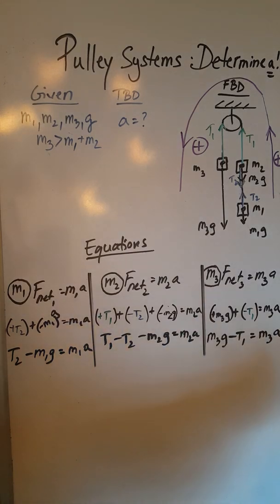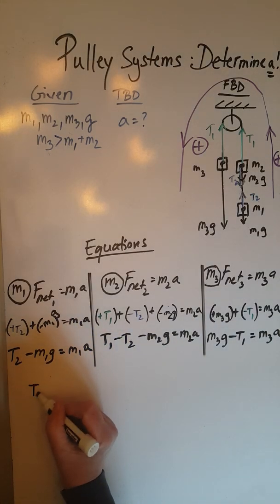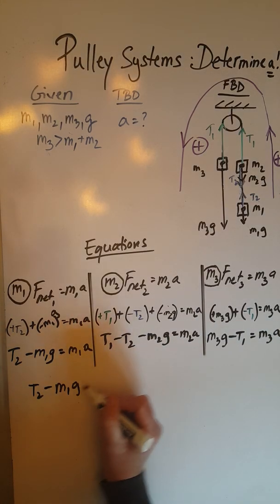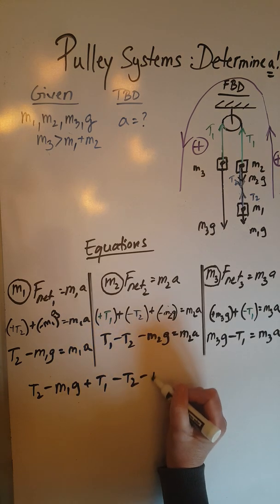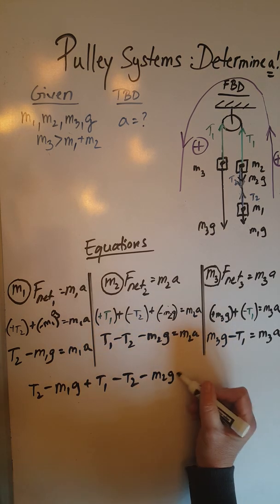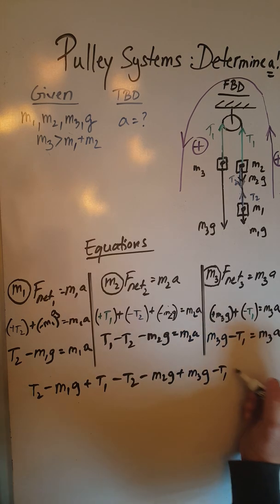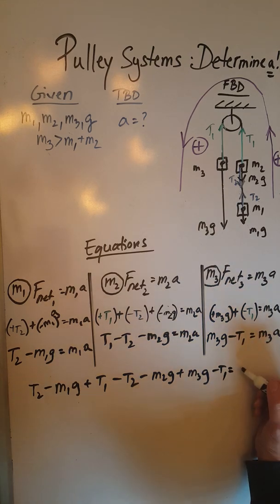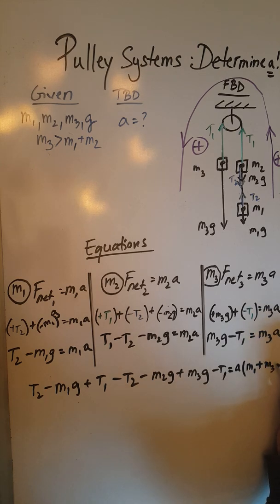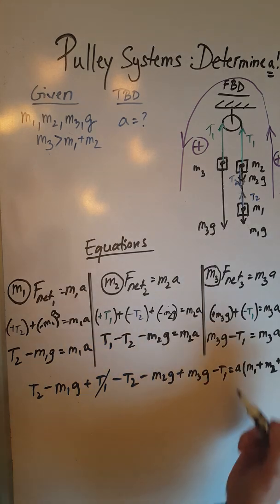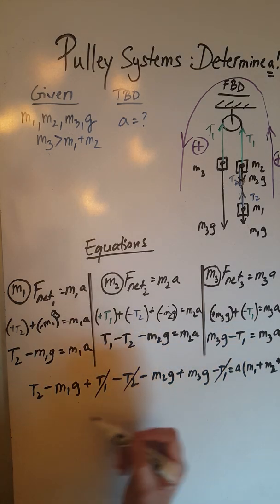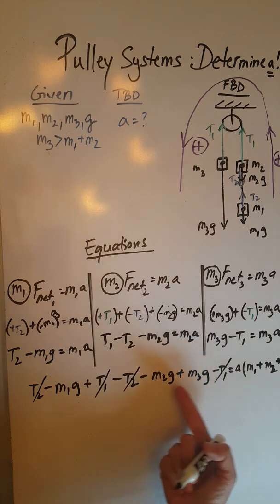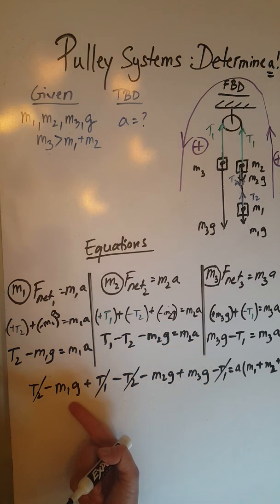First the left-hand sides: T2 minus M1G plus T1 minus T2 minus M2G plus M3G minus T1 equals M1A plus M2A plus M3A. Let's factor out an A, and then we have within parentheses the sum of the three given masses. Then T1 and negative T1, negative T2 and positive T2 cancel out.